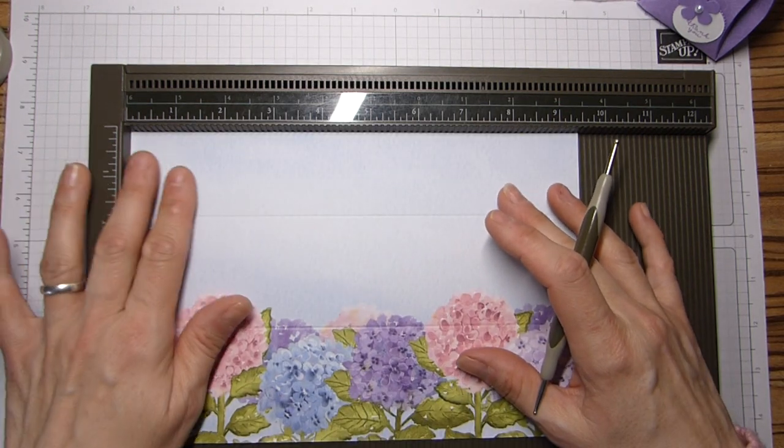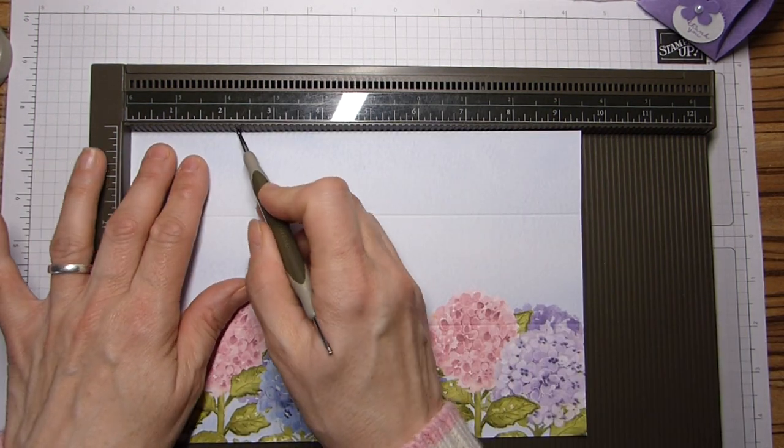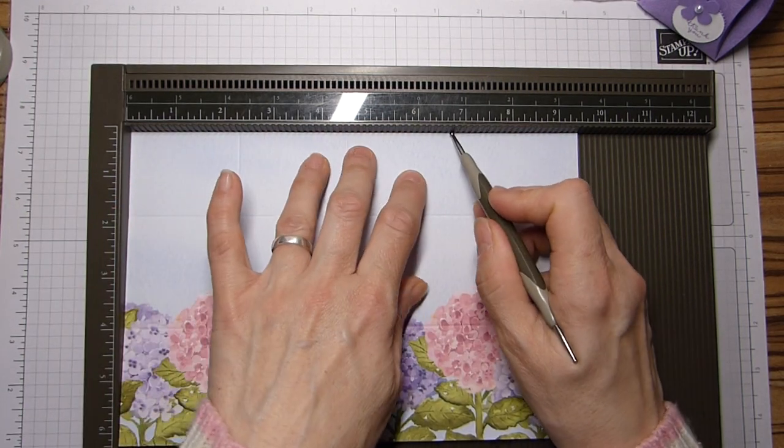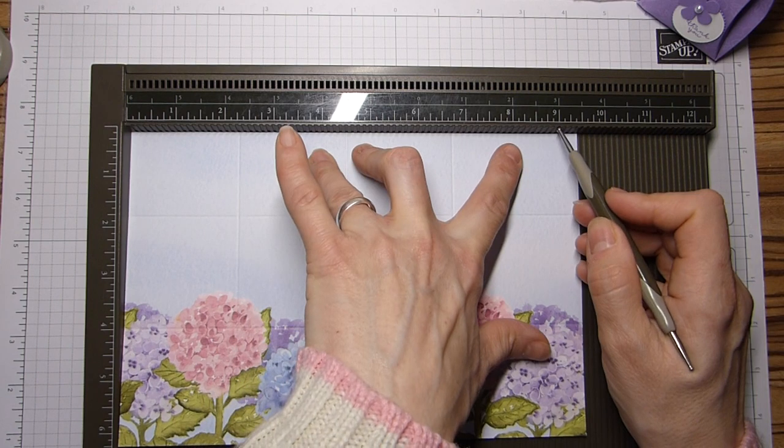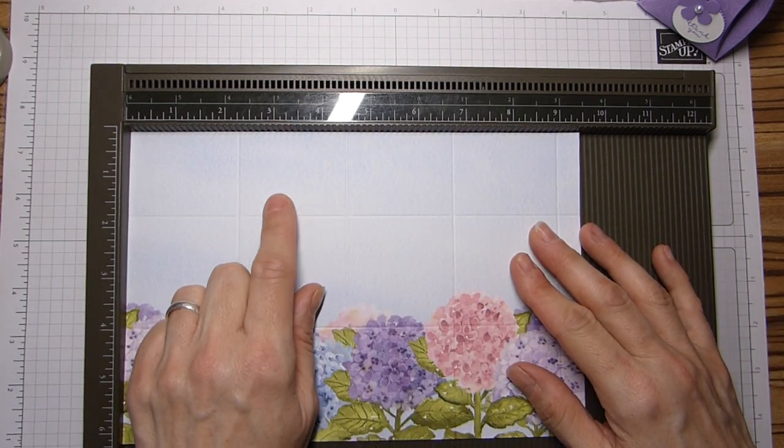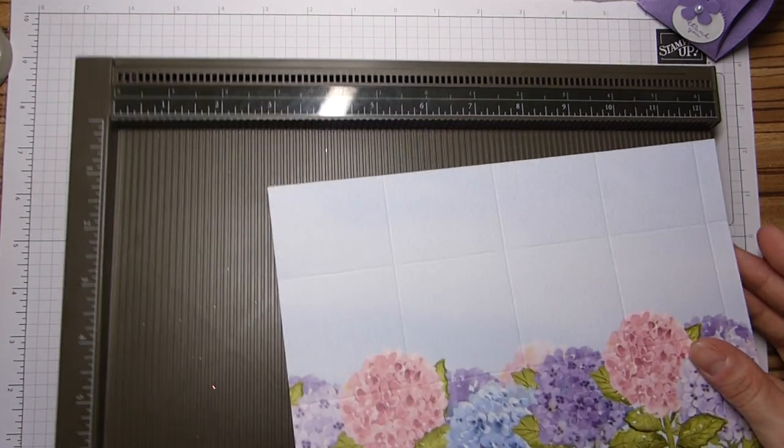Then on the long side, you want to score at two and a quarter, four and a half, six and three quarters, and nine. And in centimeters, that will be six, 12, 18, and 24.